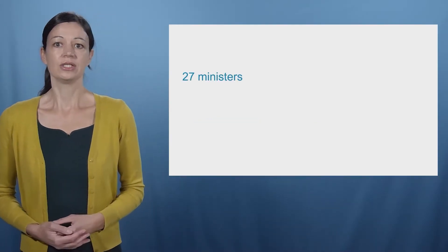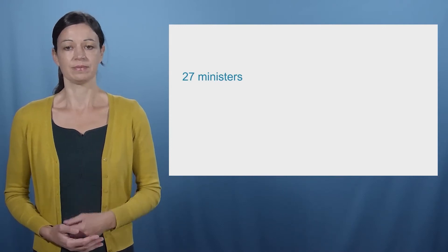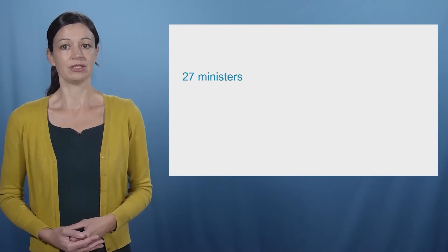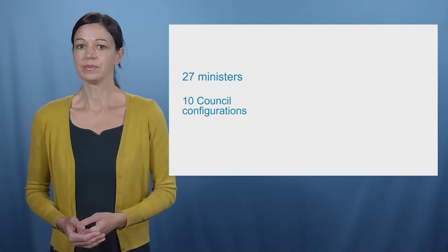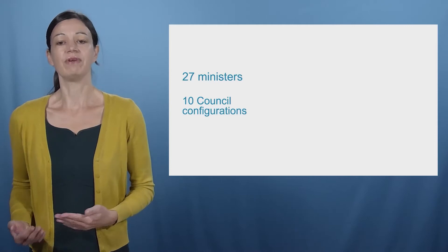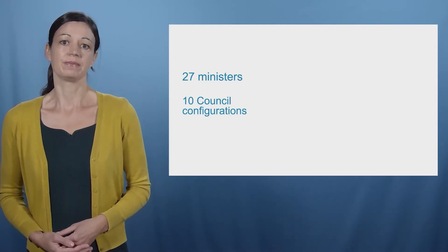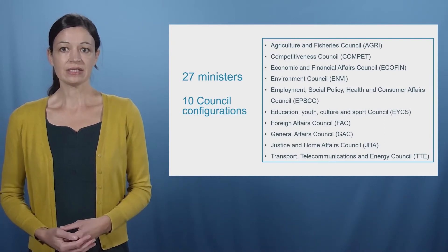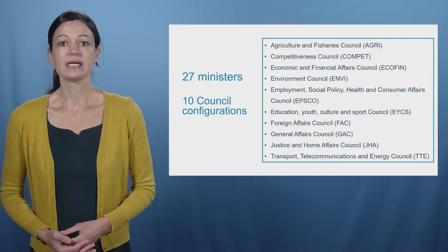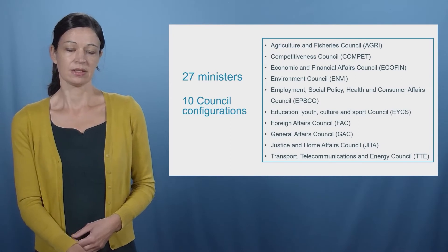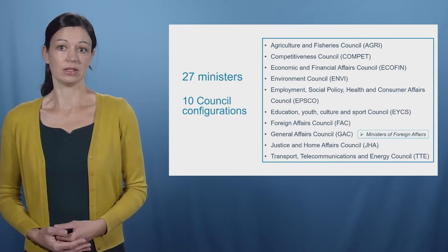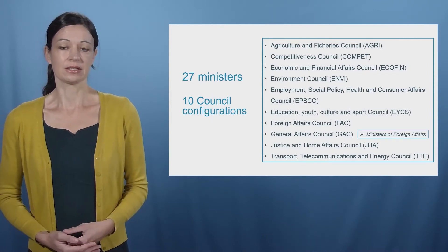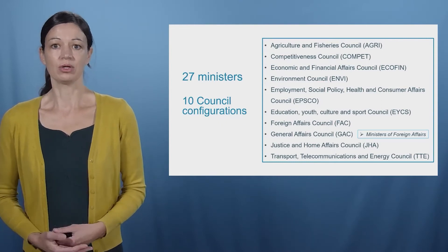The Council of the European Union consists of 27 ministers, one per EU member state. Depending on the topic under discussion, different member state ministers convene to discuss policy matters pertaining to their responsibility. For example, in the Environment Council, the ministers of environmental affairs of the 27 member states come together. In total, there are 10 different Council configurations. The General Affairs Council is one exception to the otherwise subject-specific Council formations. It deals with matters that affect more than one policy and it prepares the European Council meetings. It is the foreign ministers and sometimes the ministers for European affairs that belong to this formation.